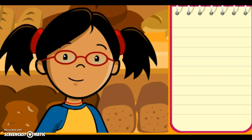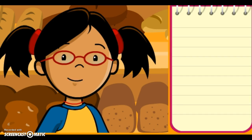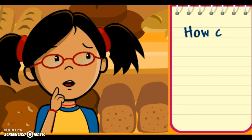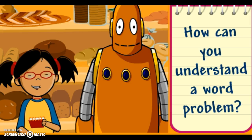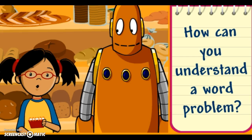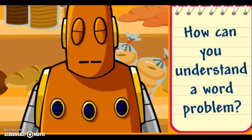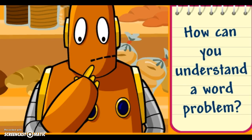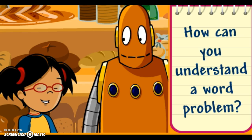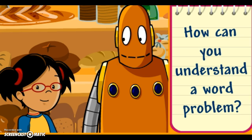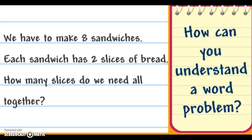To solve any problem, first you have to understand it. How can you understand a word problem? Try repeating the problem in your own words to help you understand. We want to know how many slices of bread are needed to make 8 sandwiches. You may want to underline or circle important information in the problem and underline the question.